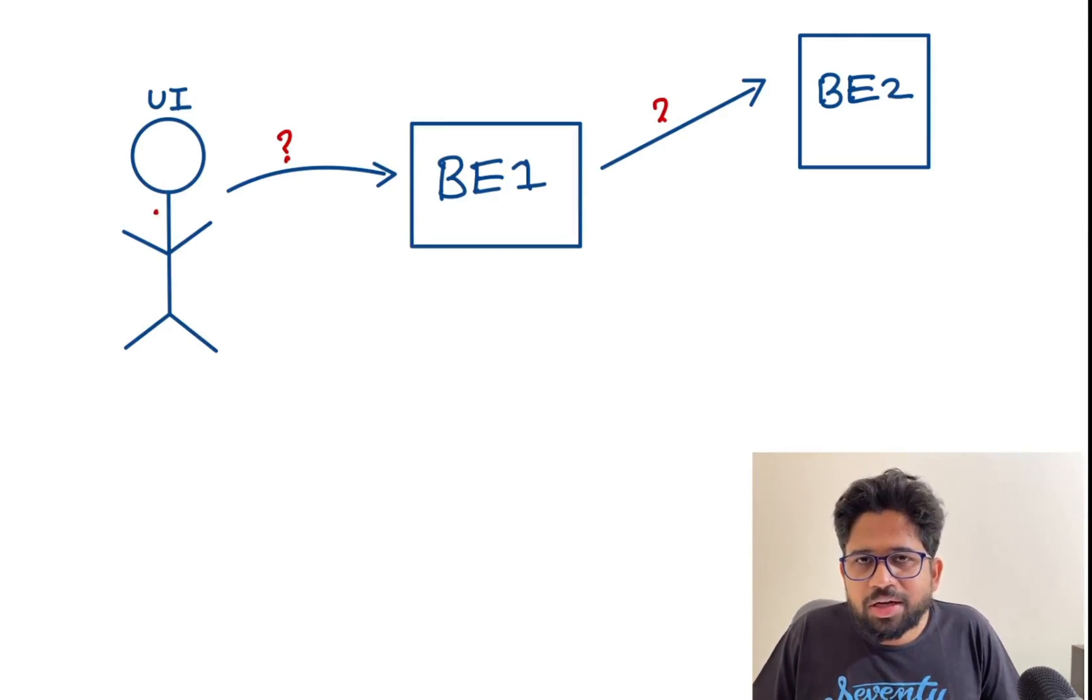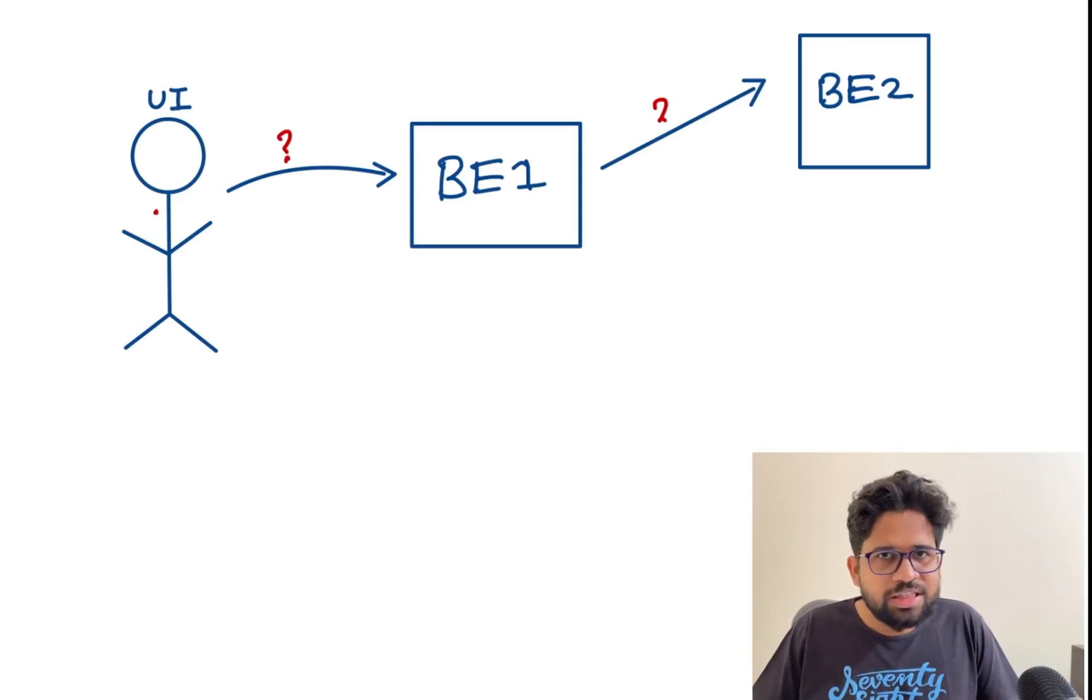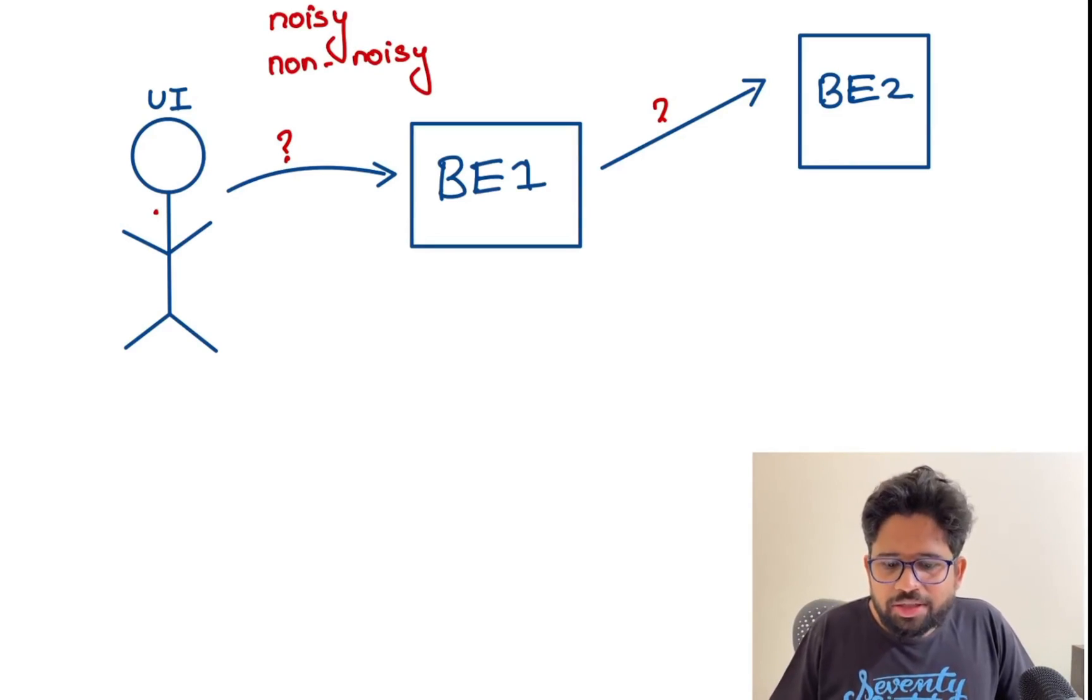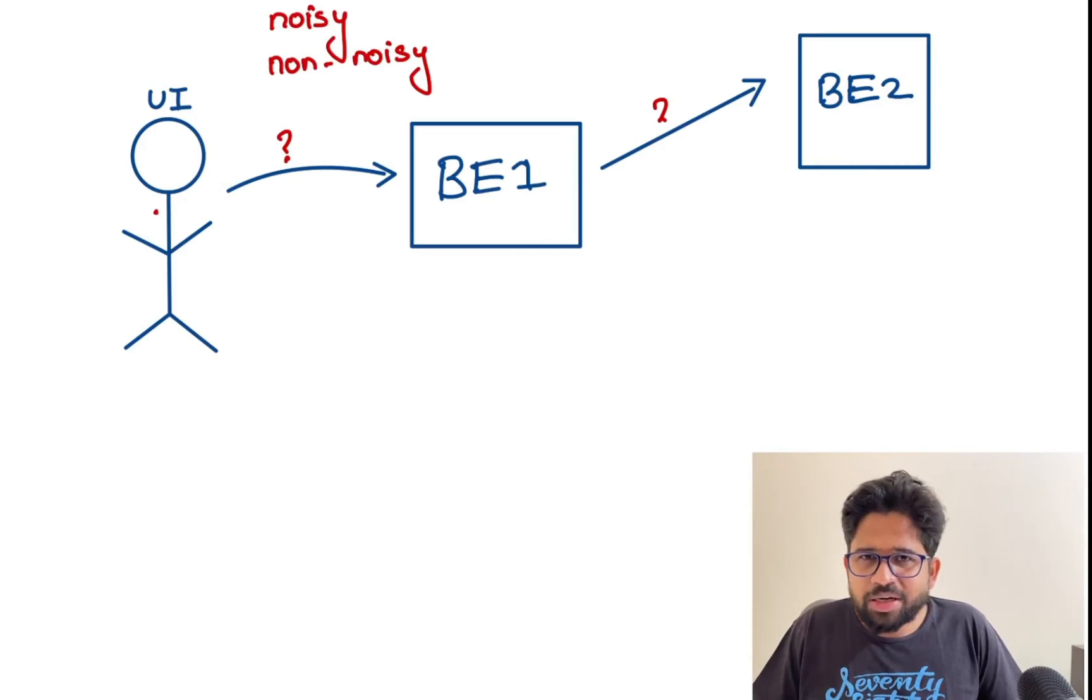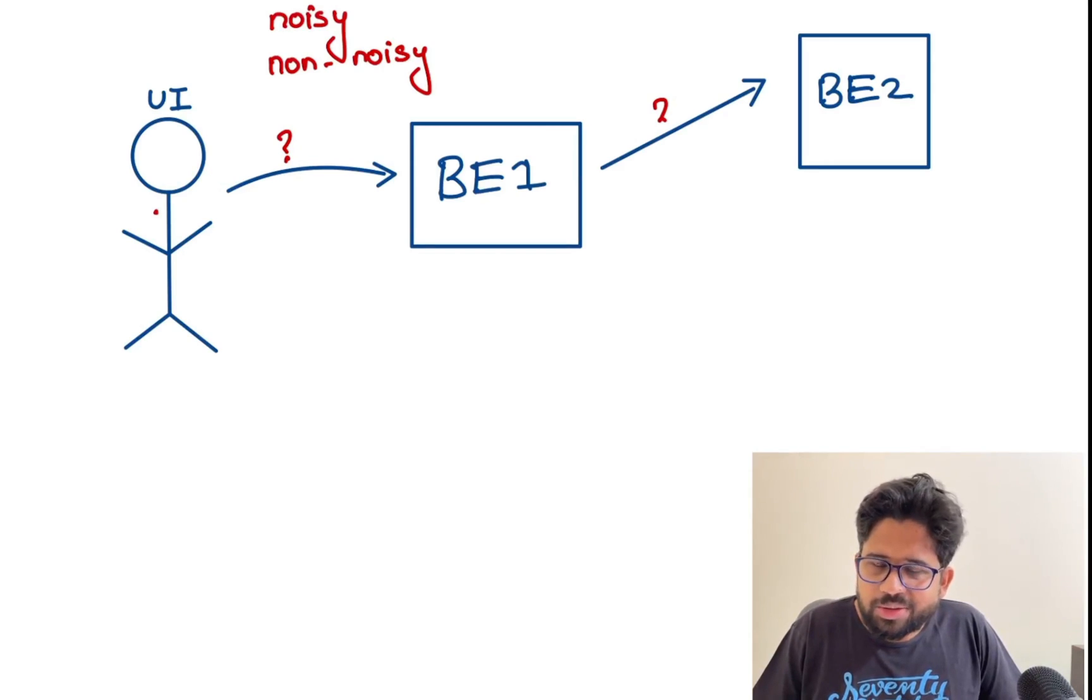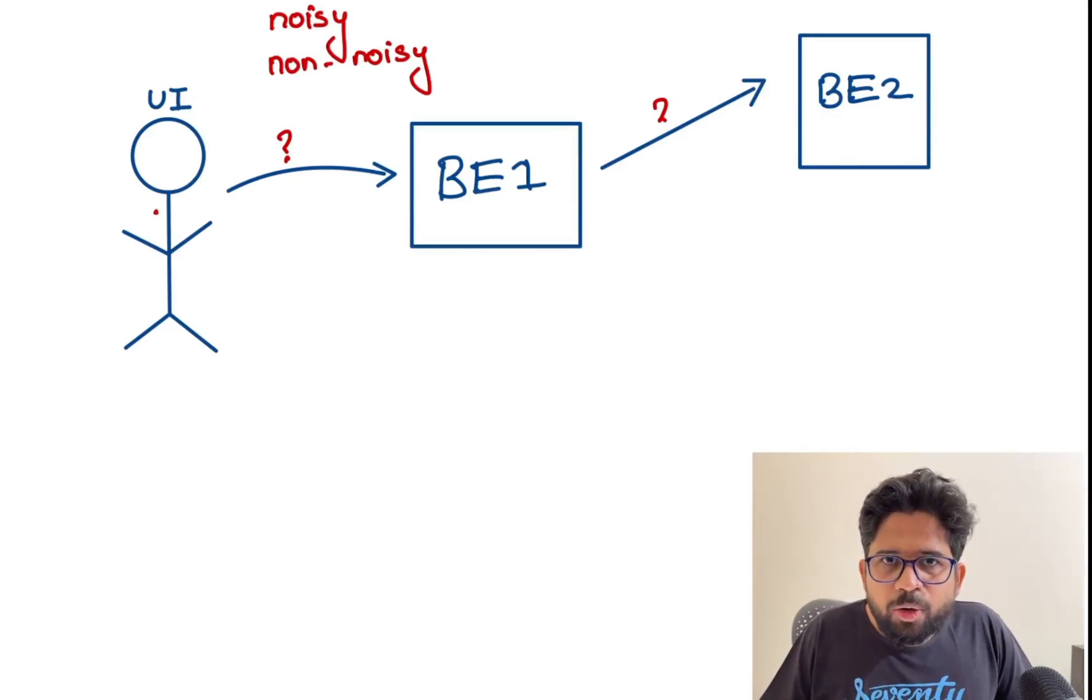I will divide communications into two sections: noisy communication and non-noisy communication. For non-noisy communication, there will be simple request, simple response. A client makes a request to the server, the server processes the data and gives them the response. There is no chattiness between the client and servers. For noisy communication, like in gaming applications, both the client and server will have chatty communication.